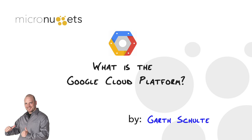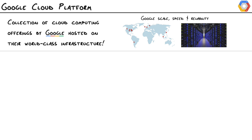We'll talk about the products, services, and strengths, and see where it fits in the big cloud picture. Google's Cloud is a collection of cloud computing products and services by Google hosted on their world-class infrastructure — the same infrastructure that runs Google Search, YouTube, Gmail, and Google Earth.